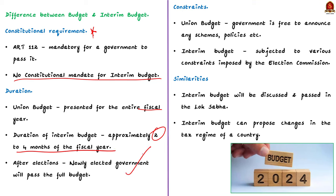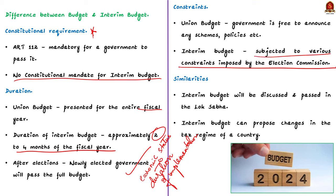Remember, even in the interim budget, it will have all the details like the current status of the economy, planned and non-planned expenditures, changes in tax rates — just like a full budget. But the difference is in the duration of implementation. Third, regarding constraints: in the union budget, the government is free to announce any schemes or policies. But the interim budget is subject to various constraints imposed by the Election Commission, which prevent the government from implementing populist policies that could unduly influence the public before elections.